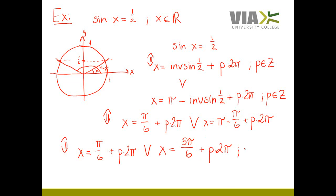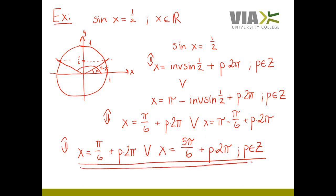And p, as we agreed, has to be an integer. That is our complete solution to the equation sin x equals 1 over 2.